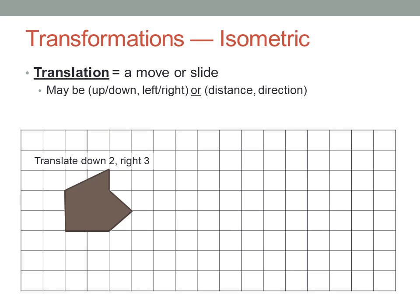For example, suppose I asked you to translate this shape down two squares and right three. You would simply do exactly that. Take the shape down two squares and then across three to the right. The image would look exactly the same as the original. Remember, this is an isometric transformation—the image will be congruent to the original object. But every point of the image will be two down and three right of where it was before.